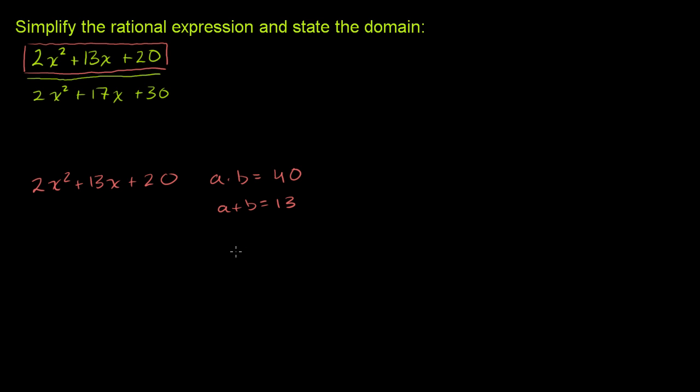And the numbers that jump out at me immediately are 5 and 8. 5 times 8 is 40. 5 plus 8 is 13. So we can break this 13x into a 5x and an 8x. And so we can rewrite this as 2x squared. And then we'll break up the 13x into, and I'm going to write the 8x first. I'm going to write 8x plus 5x.